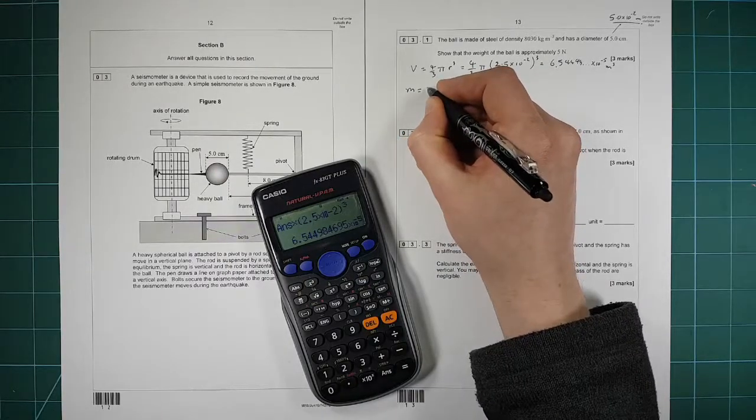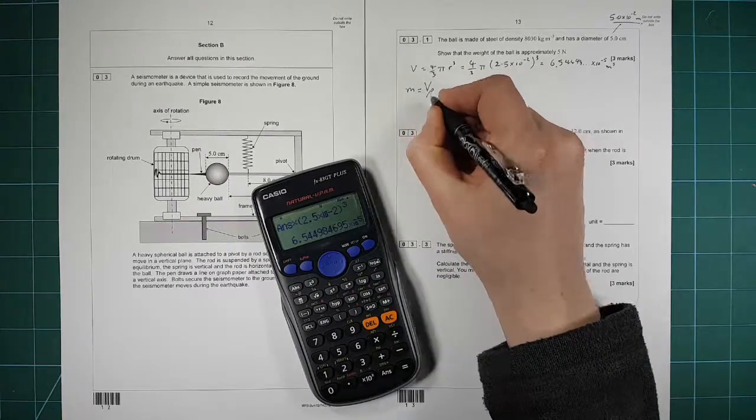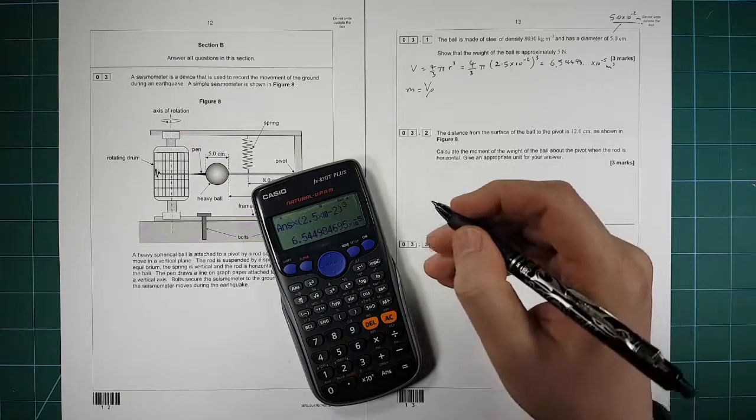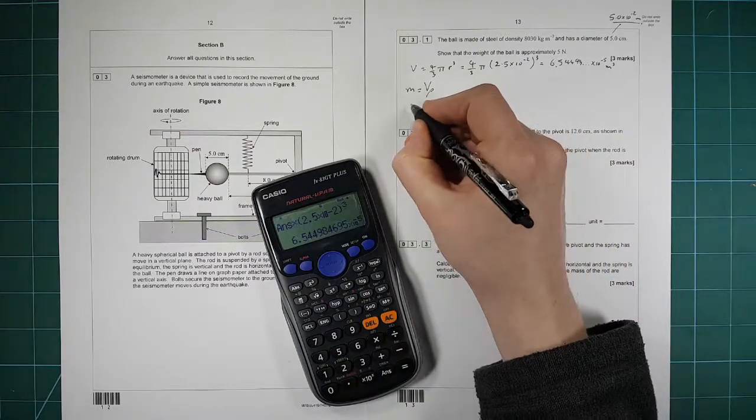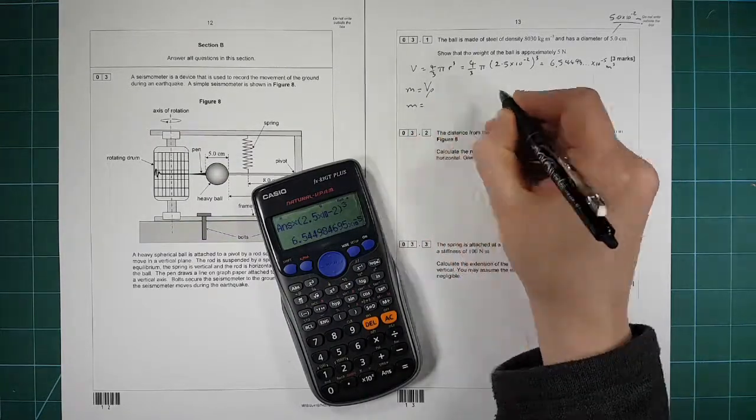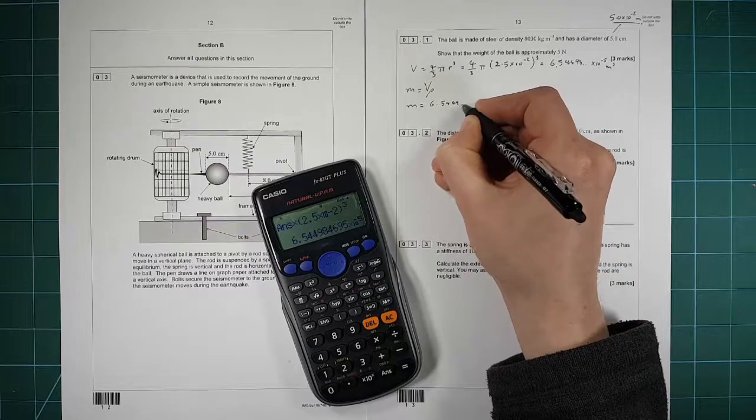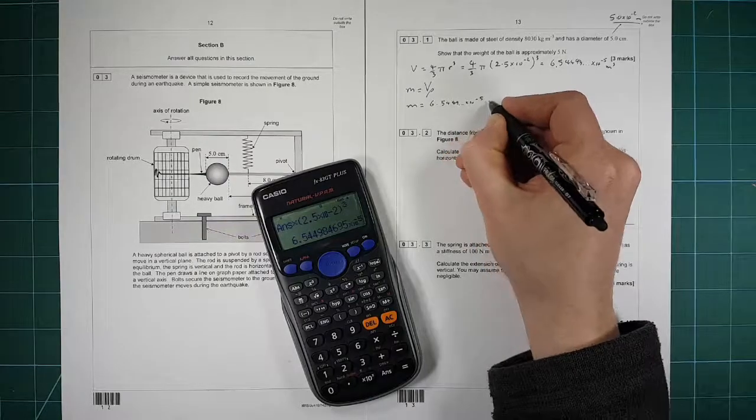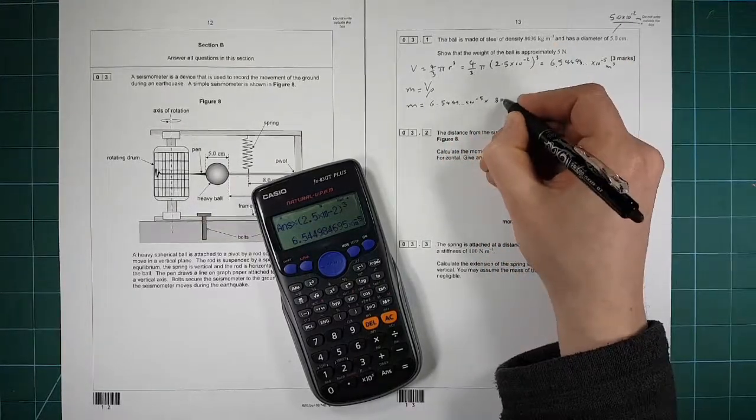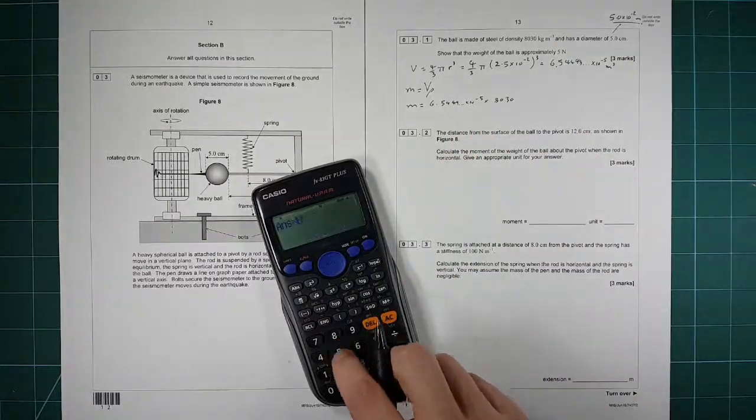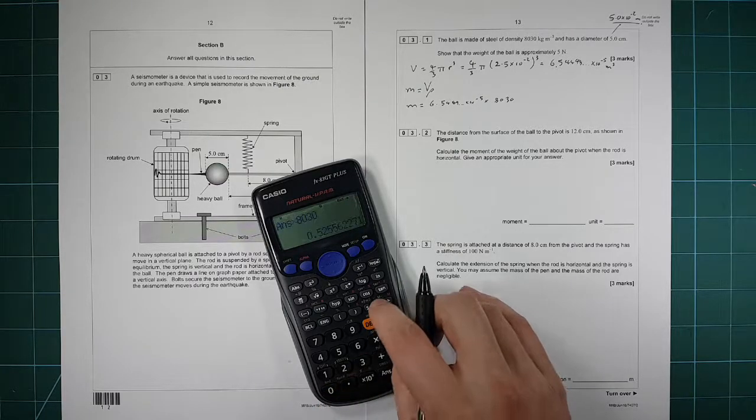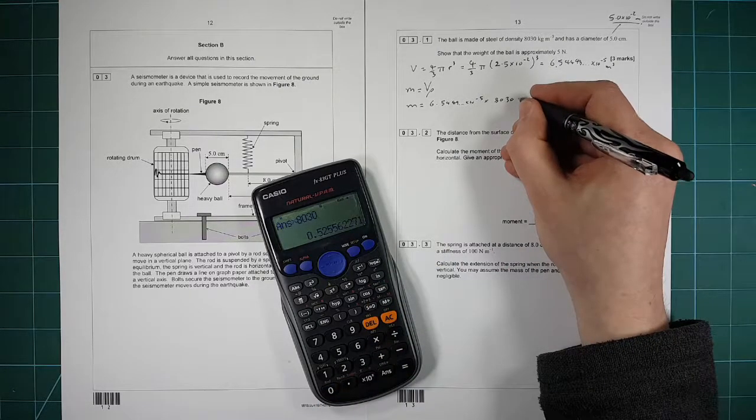M is equal to the volume times by rho, the density. That's just rearranging that density equation. So the mass is equal to 6.5449 dot dot dot times 10 to the minus 5 times by the density, which is 8030. 8030 gives us this value.